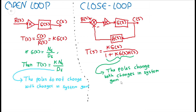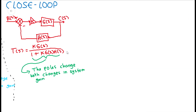The root locus, however, will give us a better illustration of the poles of T as K varies. So, let us discuss the properties of the root locus — what we mean here by properties are how the root locus behaves, and how we can analyze it in a mathematical approach.